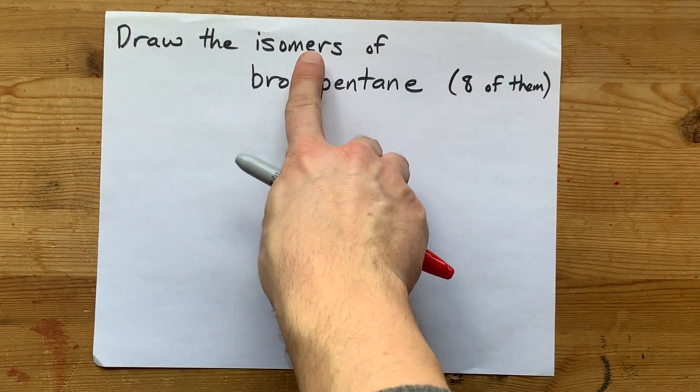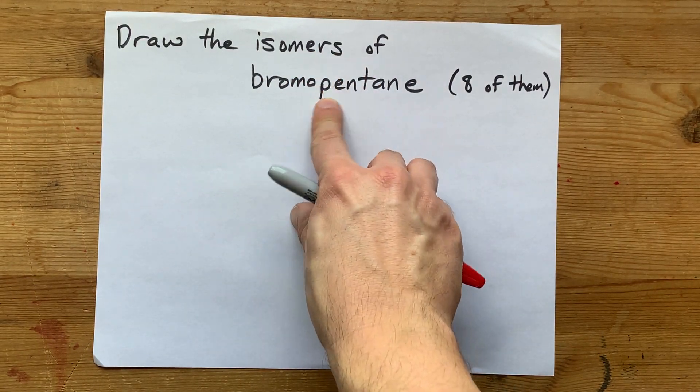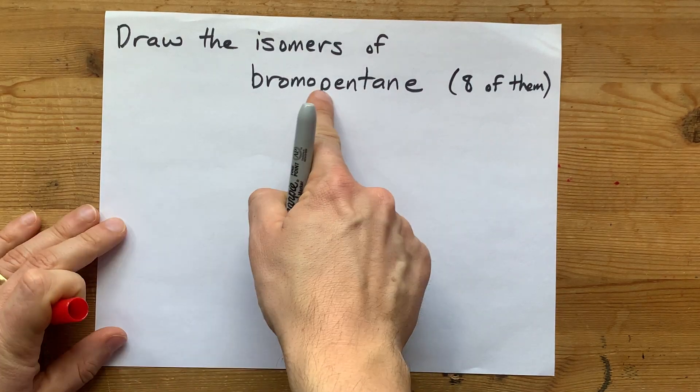Step one, first find all the isomers of your carbon backbone. For us, it's pentane.